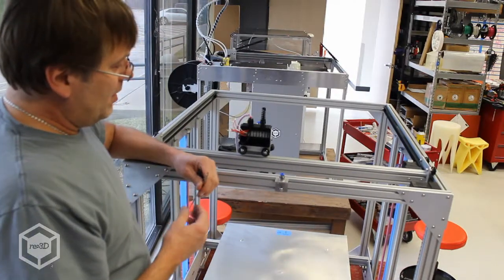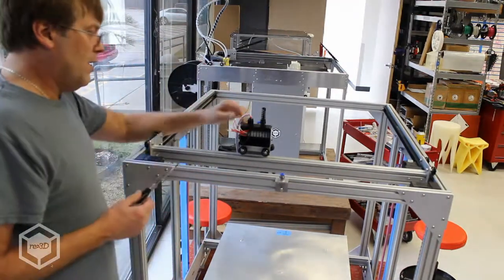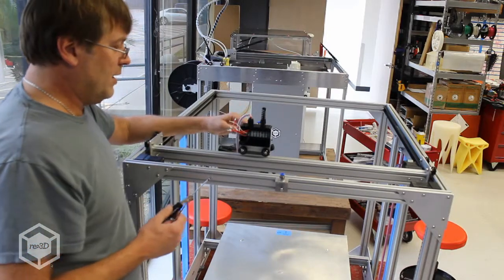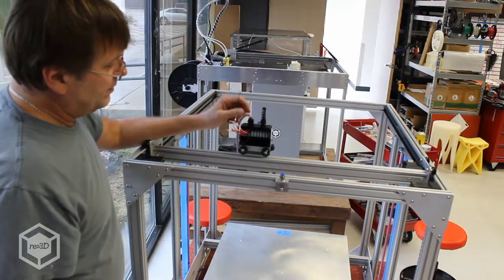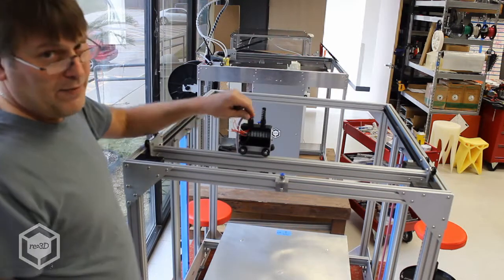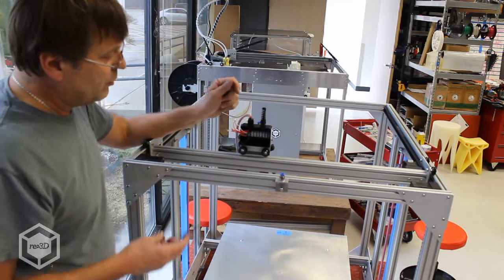Now we're going to wire up the terminal box. That's all the wires that come from the extruder. And the wiring schematic can be found in the owner's manual.